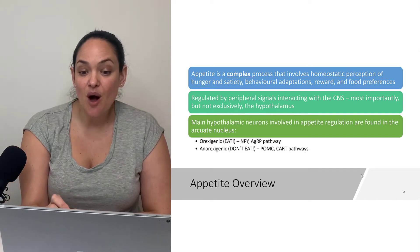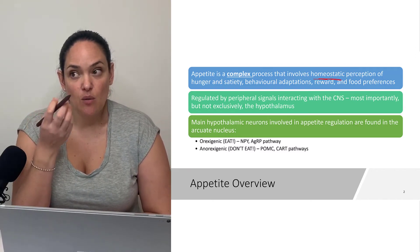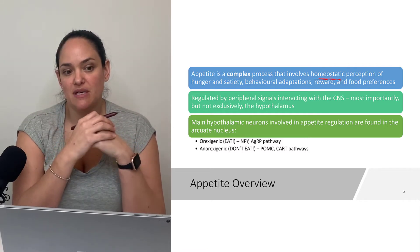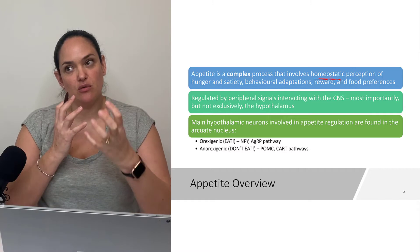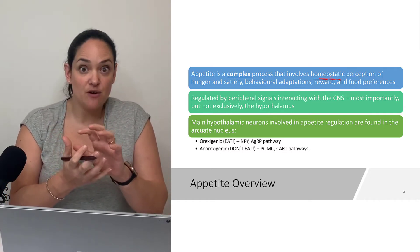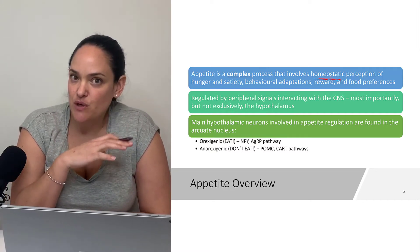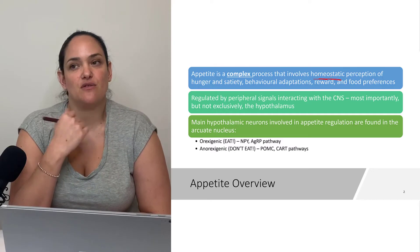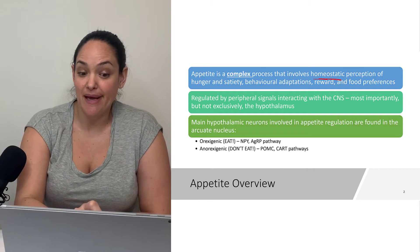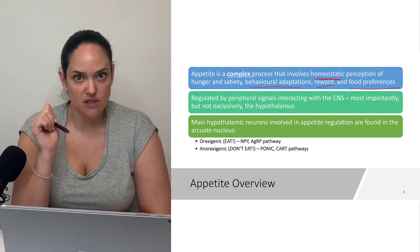It's a complex process that has a homeostatic part to it, where there's lots of internal feedback to the hypothalamus that helps — in some people more than others — keep appetite in check so we can keep energy in balance. But beyond the homeostatic control of appetite, there's also a lot of competing things that affect appetite, like behavioral adaptations, things like reward and food preferences as well.